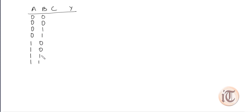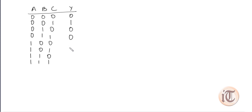Now we take a truth table for 3 variables. For variable A: 4 times 0, 4 times 1. For variable B: 2 times 0, 2 times 1, 2 times 0, 2 times 1. For variable C: alternating 0, 1, 0, 1, 0, 1, 0, 1. The output y will be: 0, 1, 0, 0, 1, 0, 0, 1.